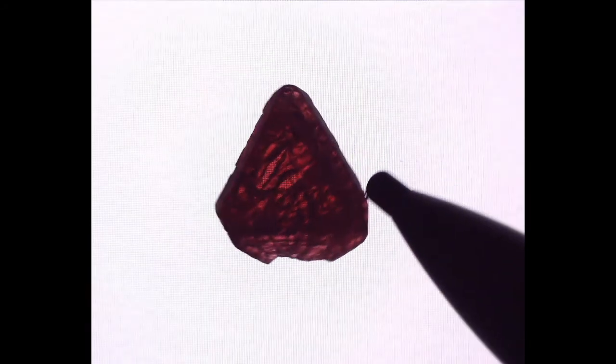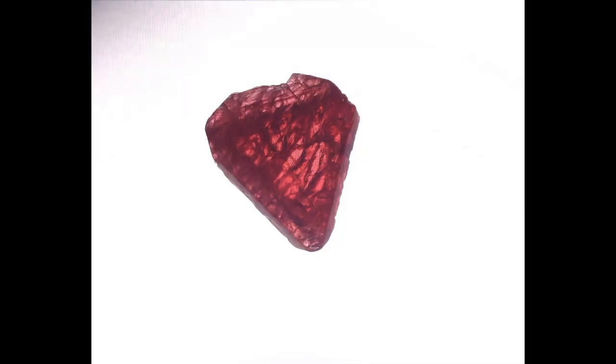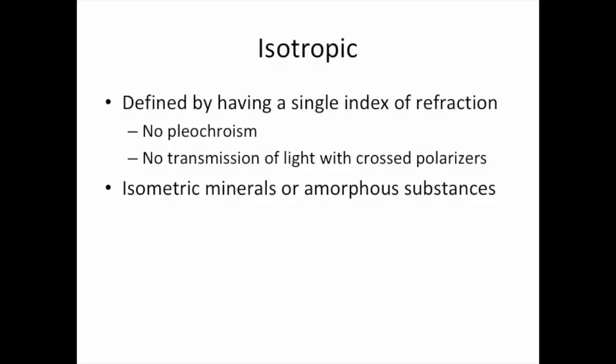If there's anything that you take home from this video, it's that isotropic materials are defined by one index of refraction, and this singular index of refraction prevents the material from exhibiting pleochroism or transmission of light under cross-polarization. Another important point: if a material is isotropic, it is either going to be of the isometric crystal class, or it is going to be an amorphous substance. Thanks for watching, and I hope you had fun learning about isotropic materials. Next time we'll pick it up with anisotropic materials in more depth, and we'll distinguish between uniaxial minerals and biaxial minerals.